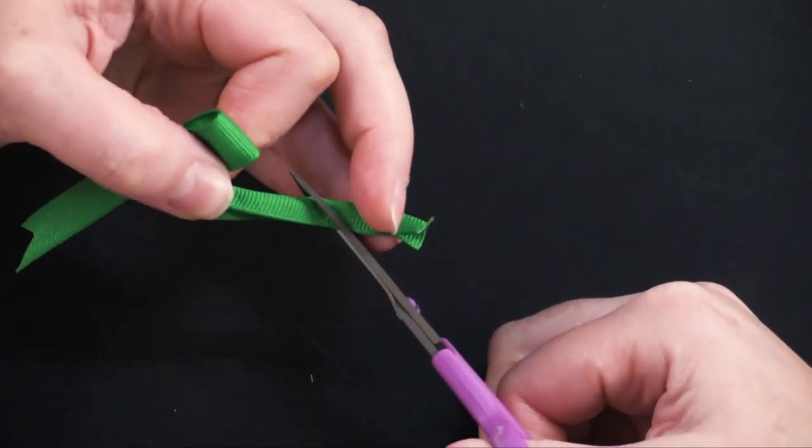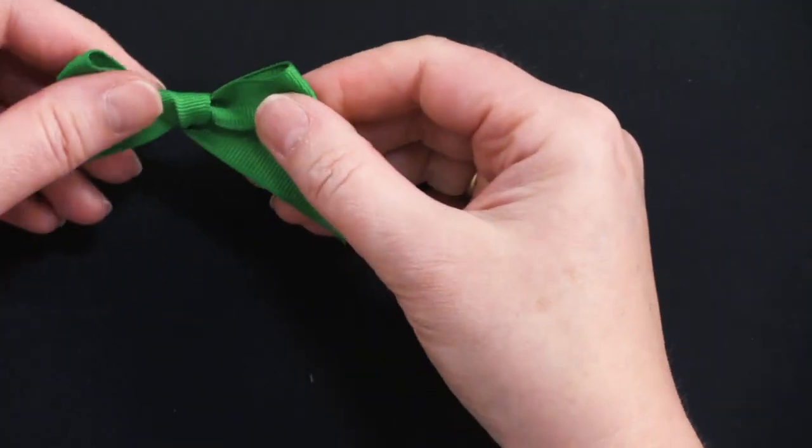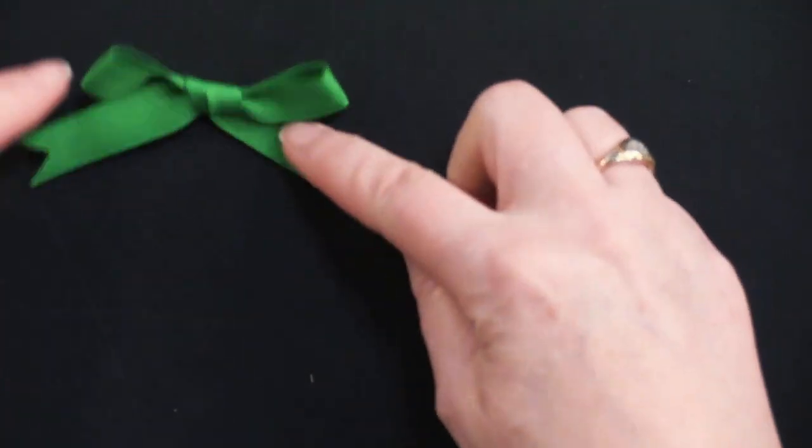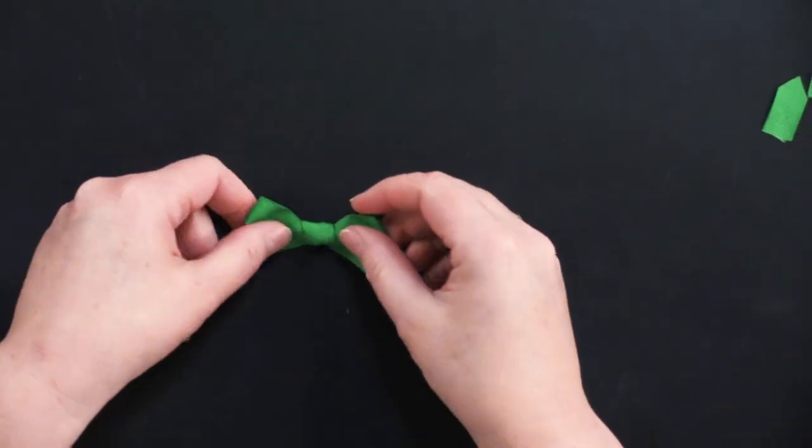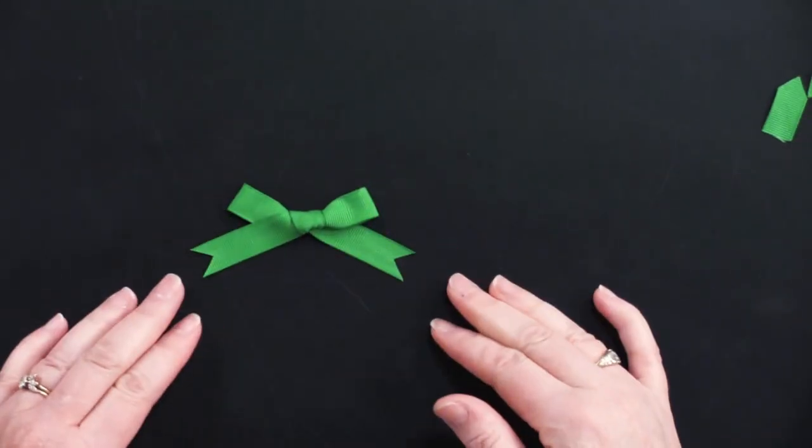Alright now, doesn't that look nice? Now you can also then turn that over. You have a very nice bow.